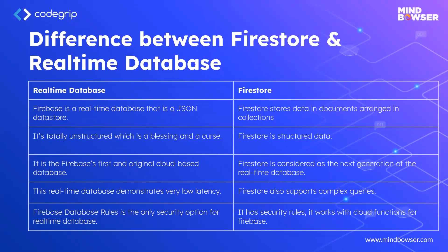The real-time DB was an unstructured database, which is in a tree format, and Firestore was structured data because it was presented in the document format.